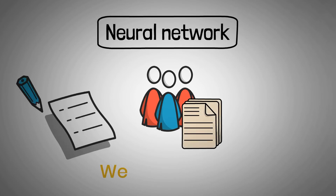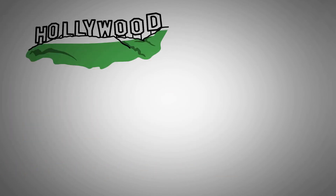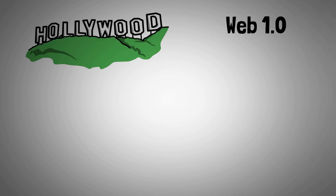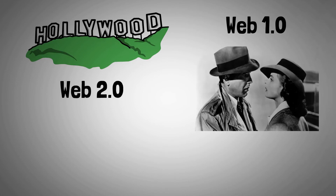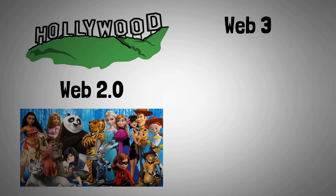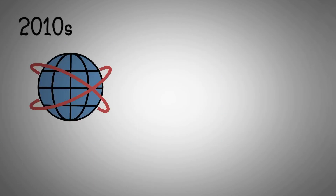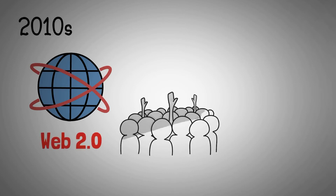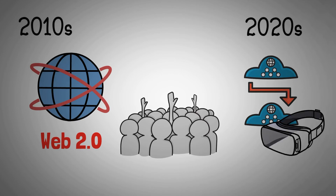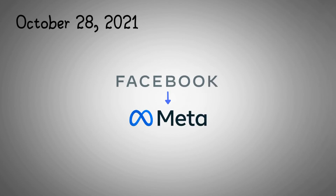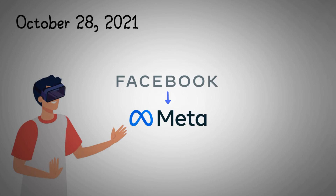To summarize the differences between Web 1.0, 2.0, and 3.0: using the film industry as a point of comparison, if Web 1.0 were the black-and-white film era, Web 2.0 would be the age of color in basic 3D, and Web 3.0 would be immersive experiences in the metaverse. Just as the 2010s were the decade in which Web 2.0 became the preeminent force in the global economic and cultural environment, the 2020s may be the decade in which Web 3.0 takes its rightful place. On October 28, 2021, Facebook changed its name to Meta, which may serve as an early indicator that the transition to Web 3.0 is gaining momentum.